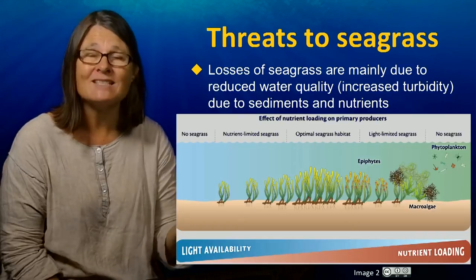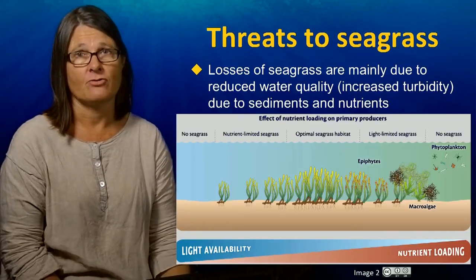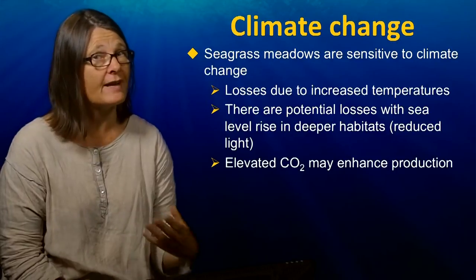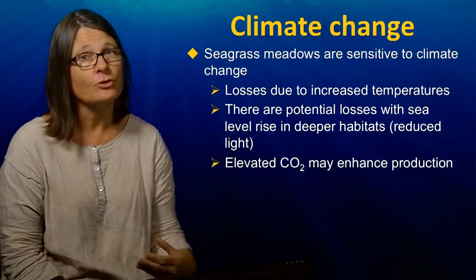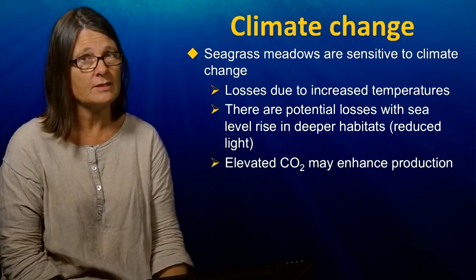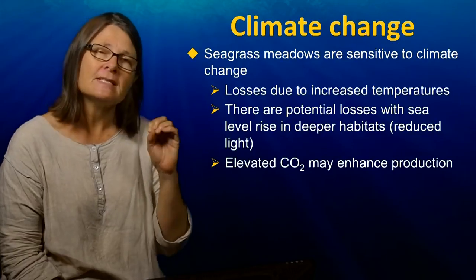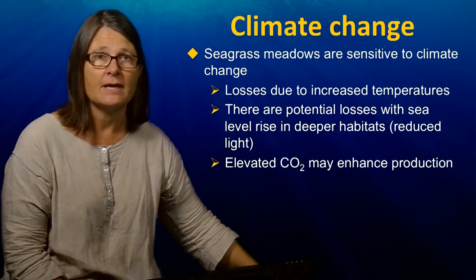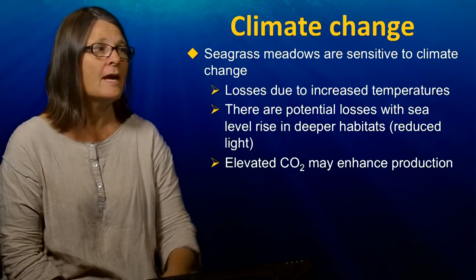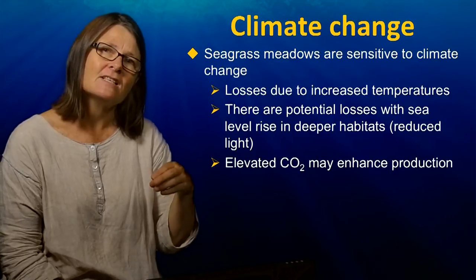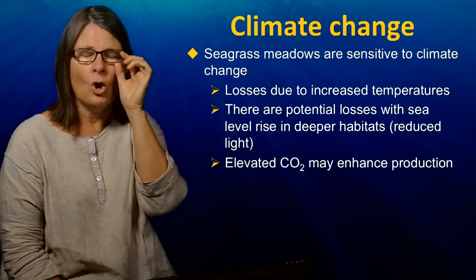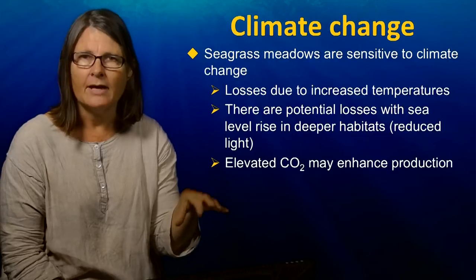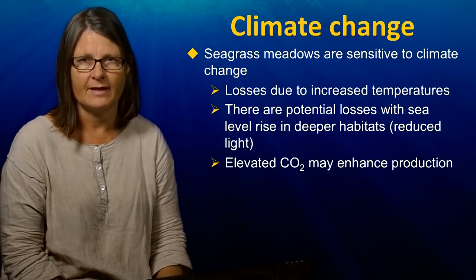Both sediments and nutrients are bad for seagrass habitats. Seagrasses are also sensitive to climate change: there have been observed losses due to increased temperatures in various parts of the world, and there are potential losses with sea level rise as seagrass in deeper habitats can no longer persist. Elevated CO2 levels may increase production in seagrass beds, although the science around the influence of elevated CO2 on seagrasses is still very young and firm conclusions are yet to be reached.